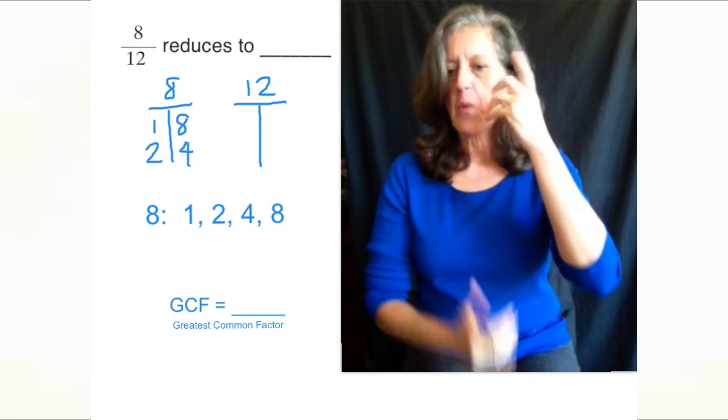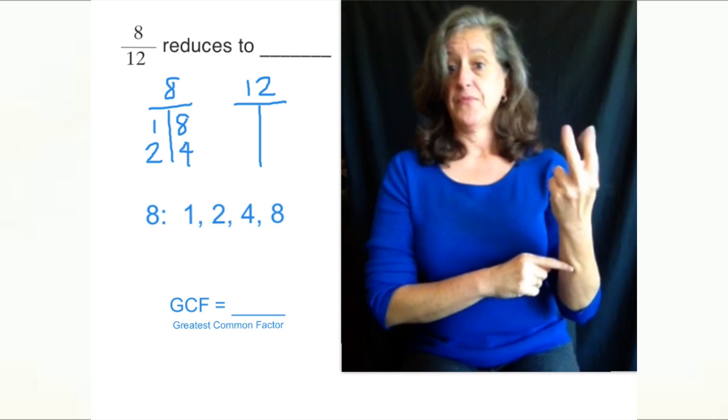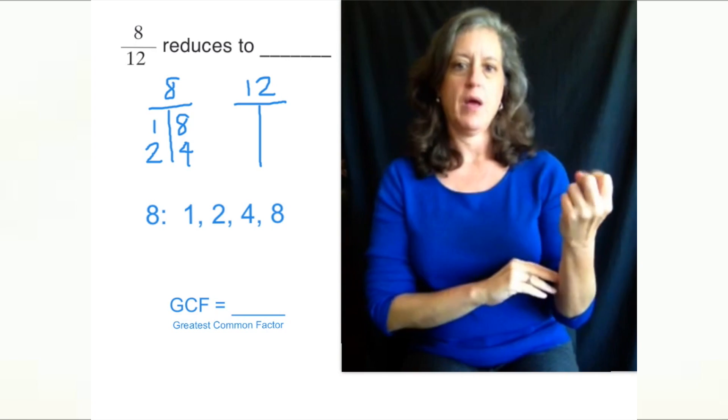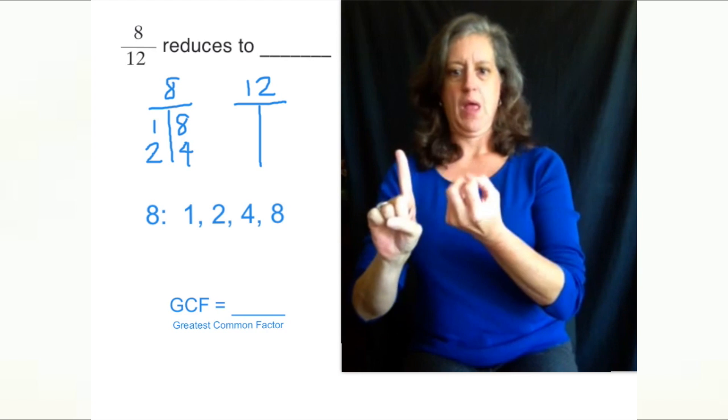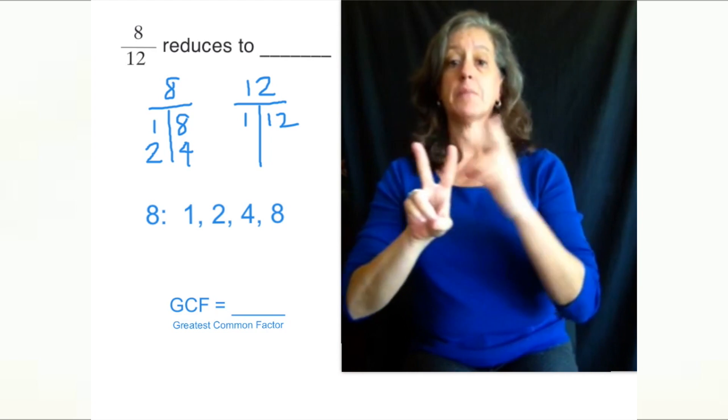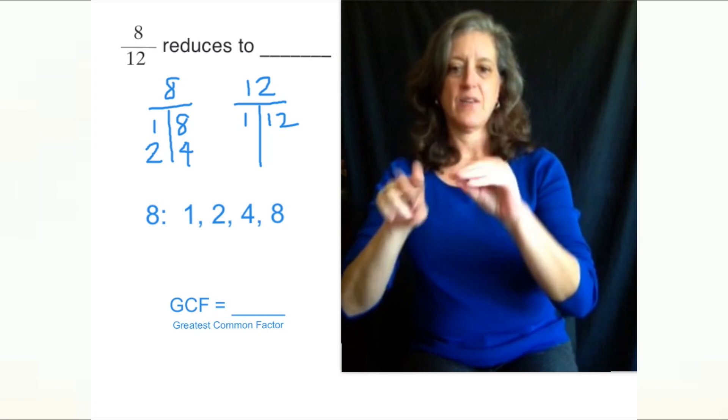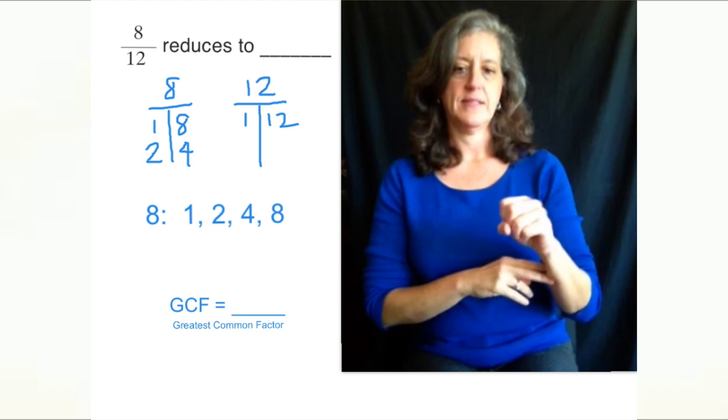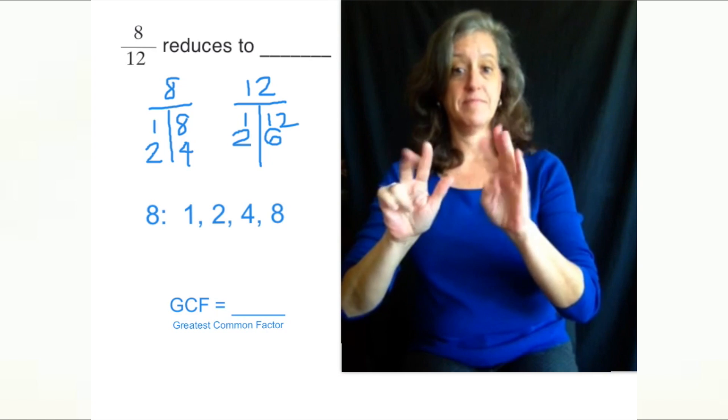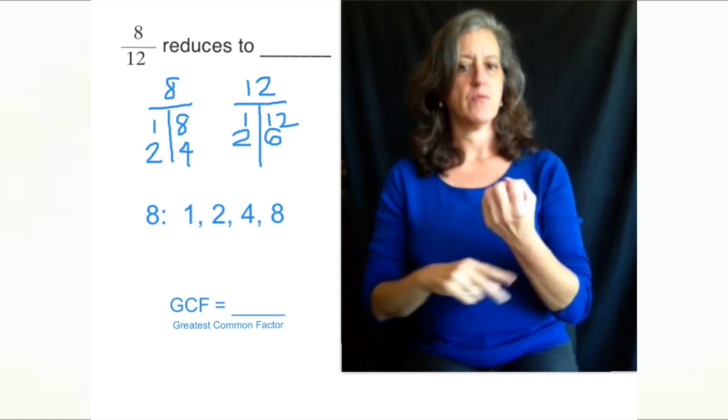Now you need to think of what numbers, when multiplied together, have an answer of 12. One times 12 equals 12. One and 12 are factors of 12. Two times 6 equals 12. So 2 and 6 are factors of 12. Three times 4 equals 12. So 3 and 4 are factors of 12.